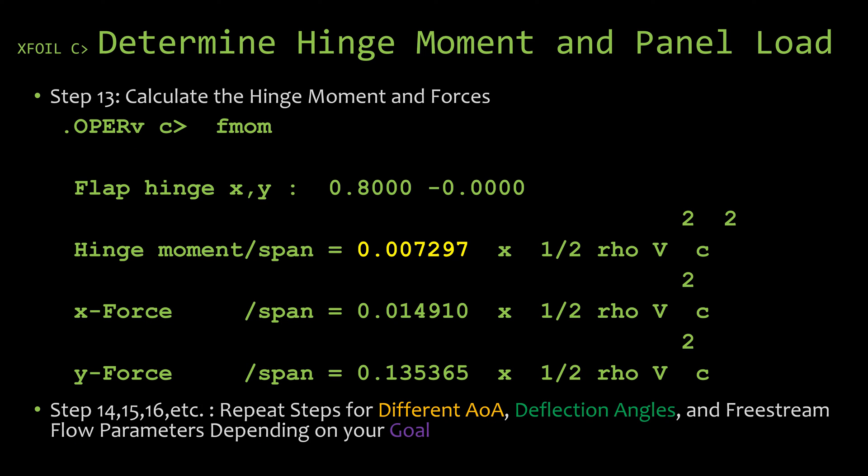Now we're going to calculate the hinge moment using the FMOM command. Typing that in and hitting enter, we're going to see it spit out some results. The first would be the flap hinge location. Then we have the hinge moment and the X and Y force. On that second line, we have the hinge moment divided by the span equals a number times one-half rho v-squared c-squared.